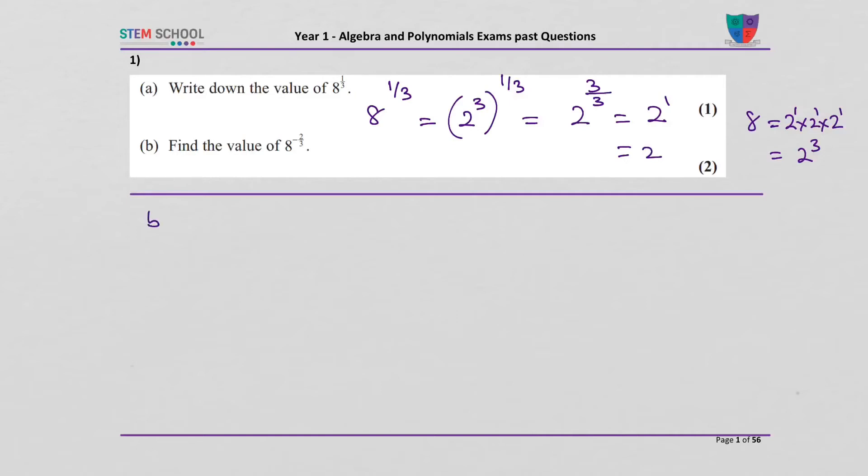Part B is 8 to the power of minus 2 thirds, and that is 2 to the power of 3 again, all to the power of minus 2 thirds.